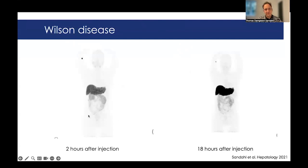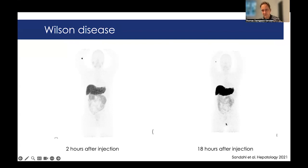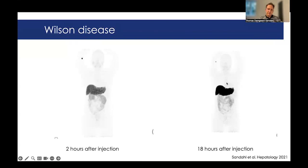That's exactly what Wilson patients can't do. After two hours you see a lot of copper in the liver in a Wilson patient, nothing in a gallbladder. And looking at 18 hours, again, just more copper in the liver. You can see a small shadow here in the small intestine, but this is actually just copper brought directly by blood to the small intestine and not an indication of excretion. So if you measure this, almost all the copper goes directly to the liver. By this, we can actually diagnose Wilson disease.